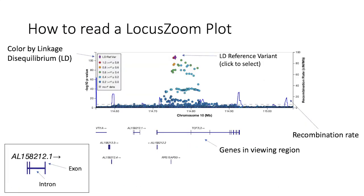The key to making this plot is not just the visualization, but the data behind it. We've brought together information like the recombination rate track from the HapMap project, genes in the region overlaid with genetic coordinates from GenCode, and linkage disequilibrium from the 1000 Genomes project with a selection of possible LD populations. Together, these can be overlaid in a single region plot to provide biological context for your results.